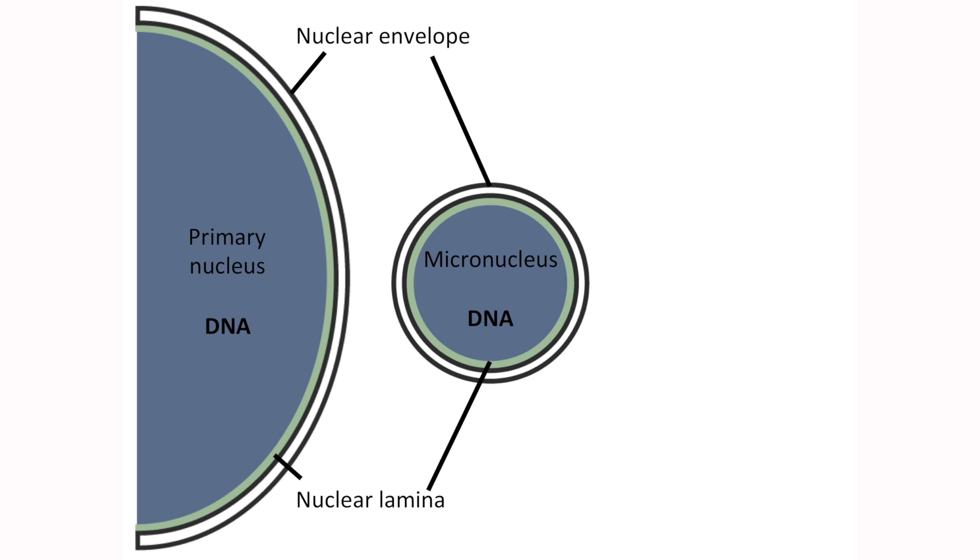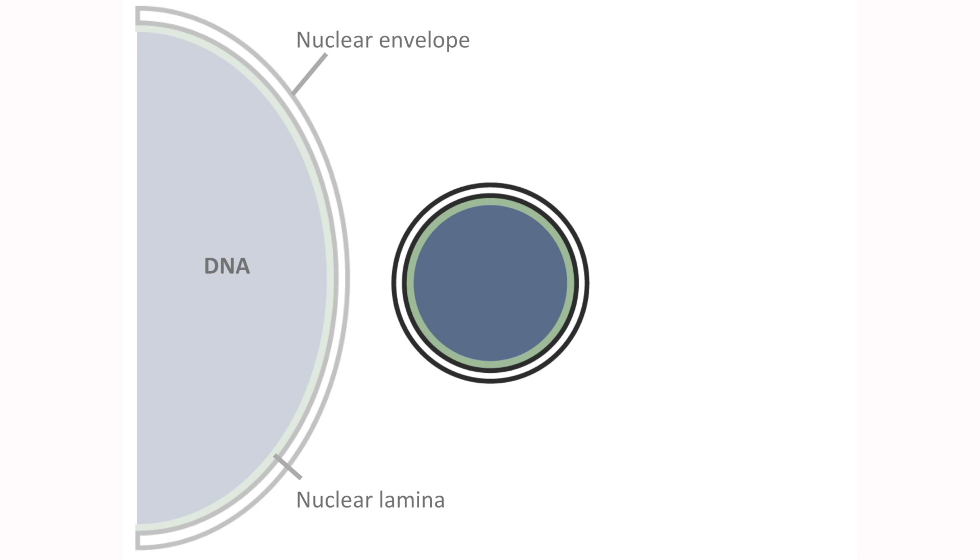And after the cell goes out of mitosis and is done dividing, this piece of DNA will form its own nucleus in addition to all the rest of the chromatin, which is forming what we call the primary nucleus. And this little guy we call the micronucleus.